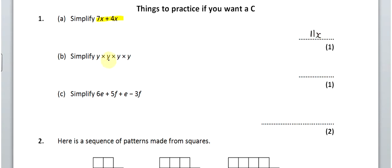Now, y times y times y times y, so when you multiply it means you're going to get a power, this is going to be y to the power of 4, because there's 4 of them.